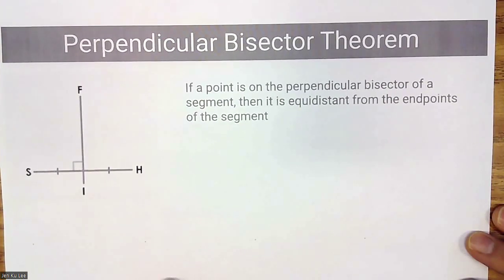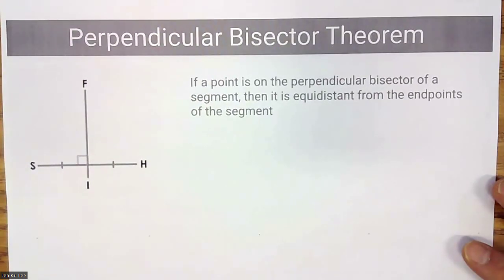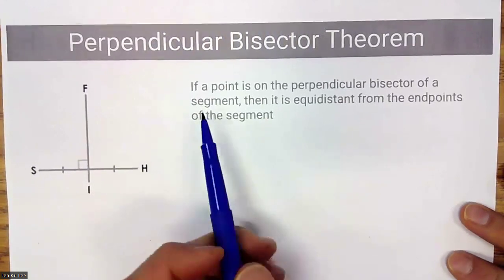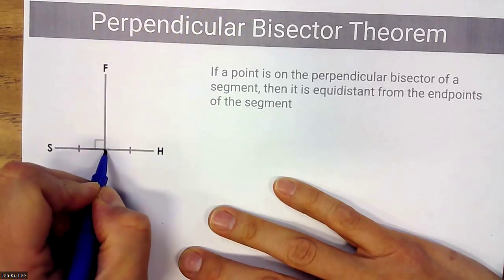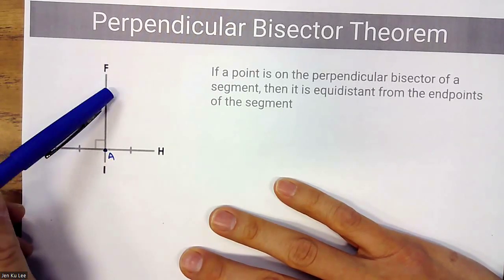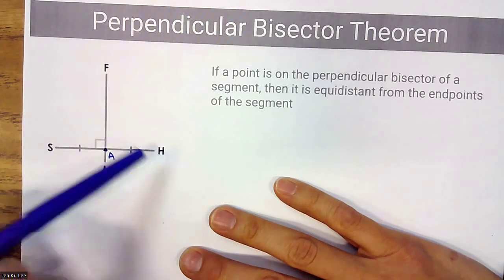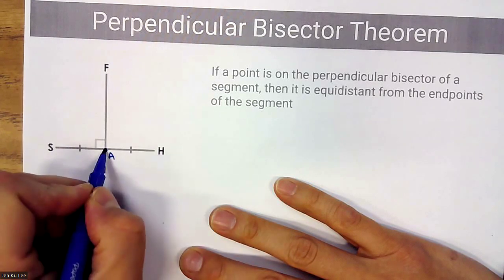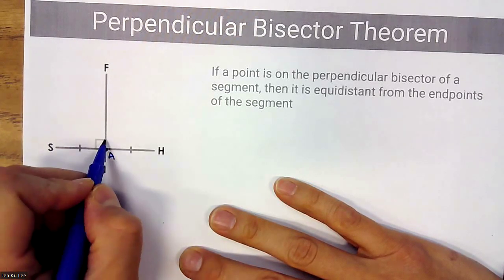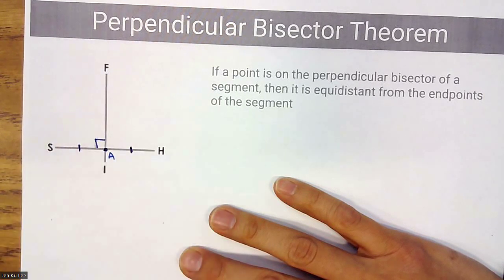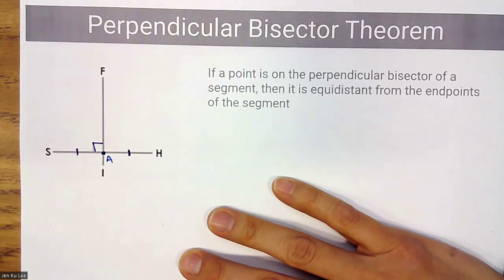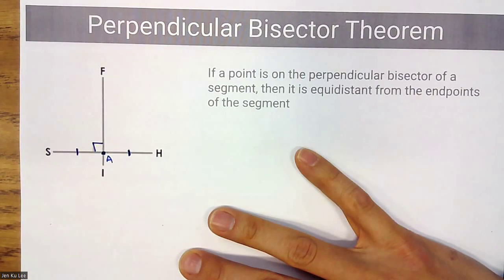This is the perpendicular bisector theorem. If a point is on the perpendicular bisector of a segment — for example, point A is on the perpendicular bisector of S-H — then it is equidistant from the endpoints of the segment. The line is perpendicular because of the 90-degree angle, and bisecting because SA is congruent to HA, so the point is equidistant from the endpoints.